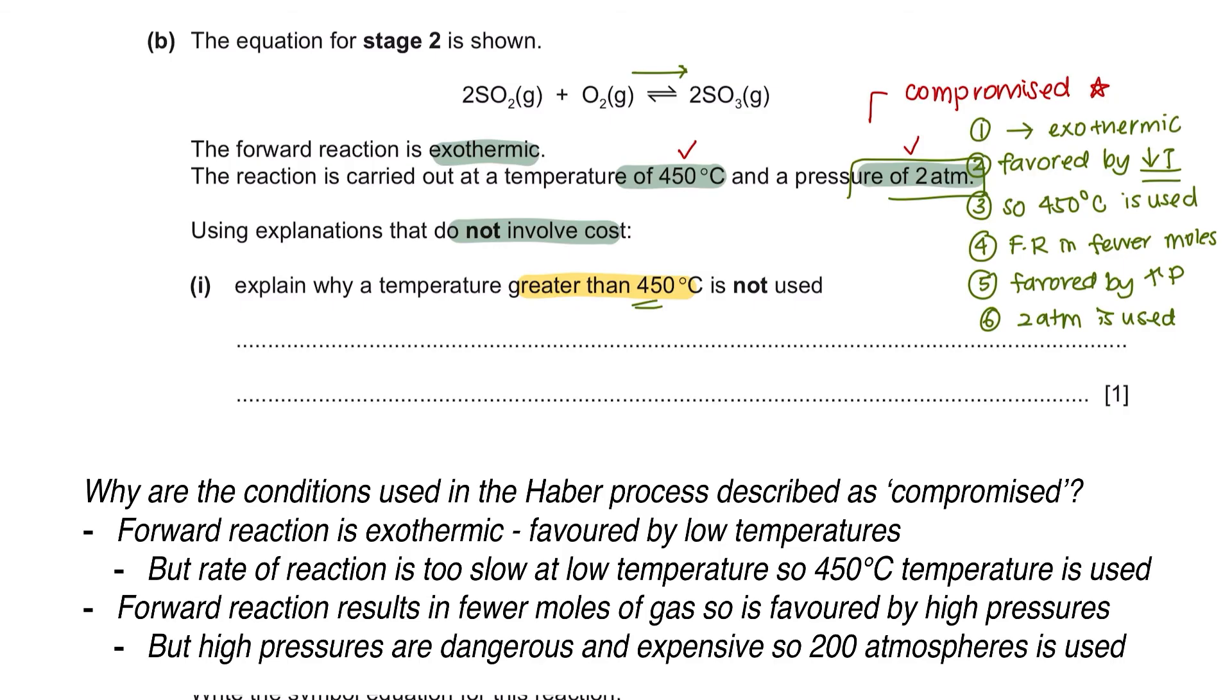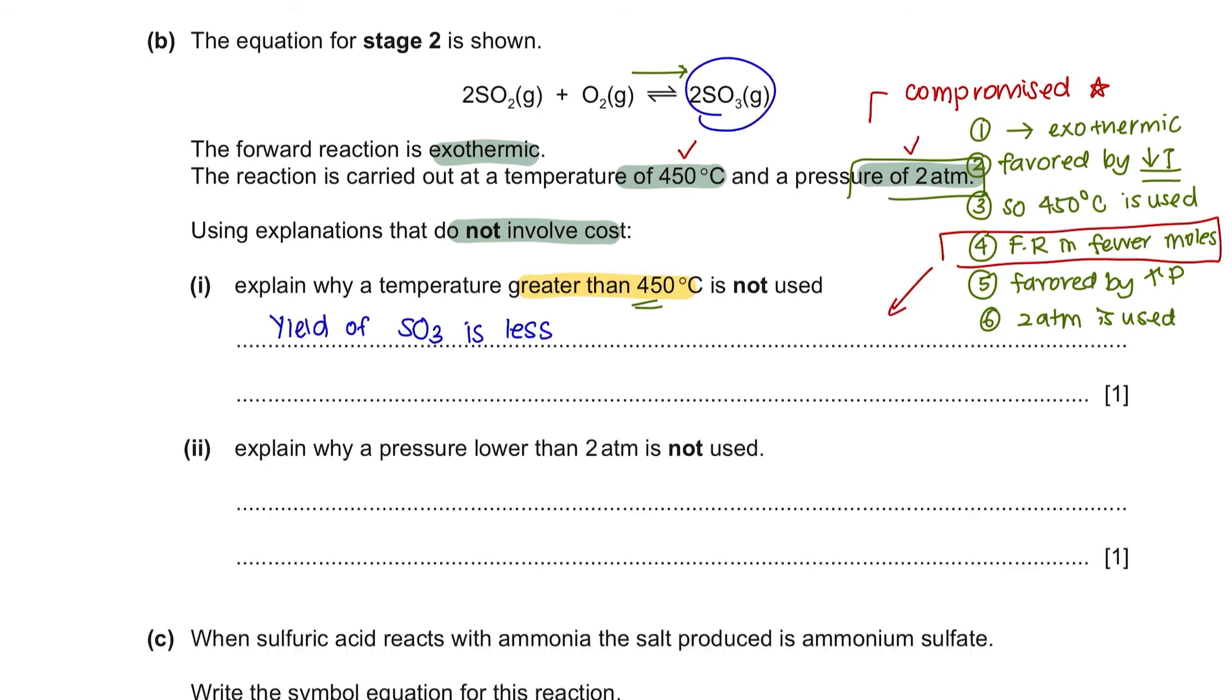So if you were asked why a temperature greater than 450 degrees Celsius is not used, you could simply mention that the yield of SO3 will be less. Part 2. Explain why a pressure lower than 2 atm is not used. And the reason would be the same.